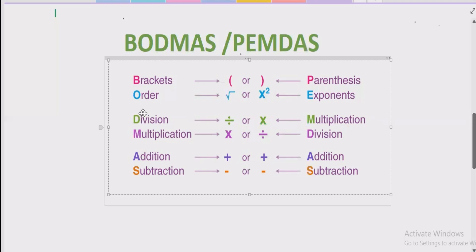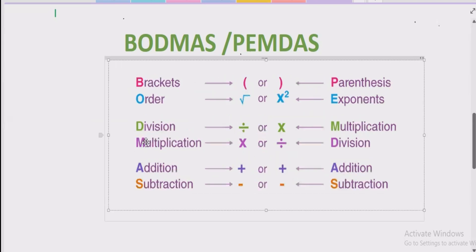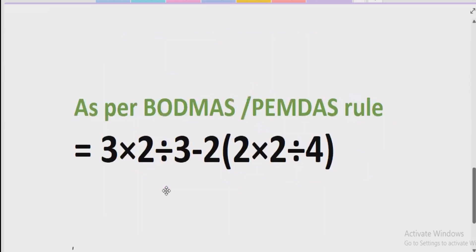Step number three is you have to go left to right in your expression and find out division and multiplication. If division is coming first, you have to solve the division first, and if multiplication is coming first, you have to solve the multiplication first. Similarly, for addition and subtraction we have the same rule — solve whichever comes first from left to right.